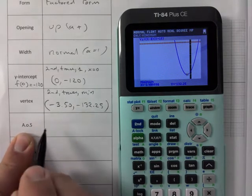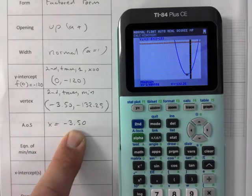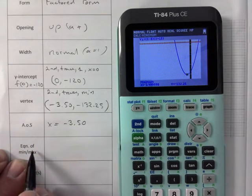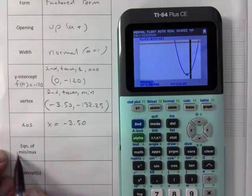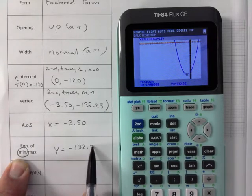Okay. Axis of symmetry, right, is the equation x equals negative 3.5. It's a vertical line. Equation of min or max. In this case, there is only a min, right? So circle the min and that's y is equal to negative 132.25.